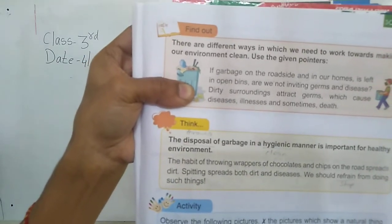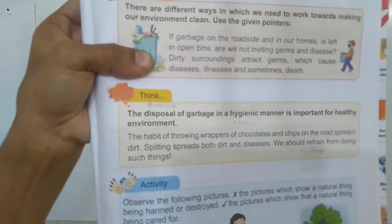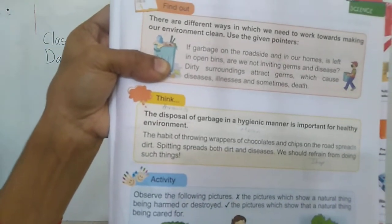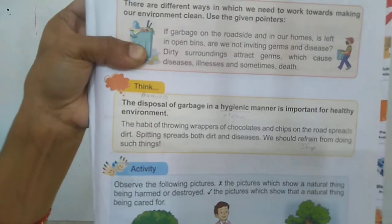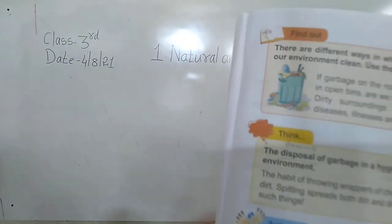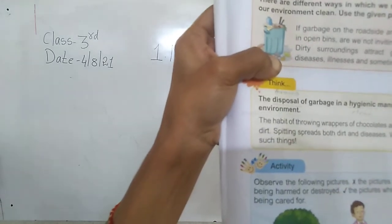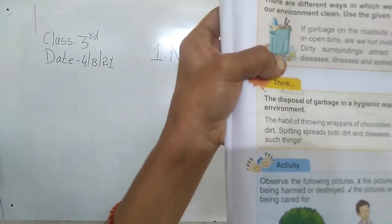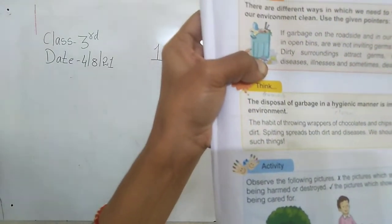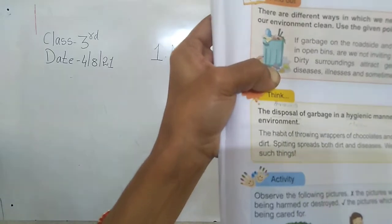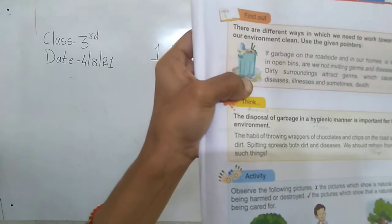The third picture shows two boys on the trunk of a tree. They are destroying the tree and the leaves are falling down. They are harming this tree, so you have to put a cross. The fourth picture shows a tiger that has been killed - you can see blood. The tiger is a natural thing and it is harmed, so put a cross.